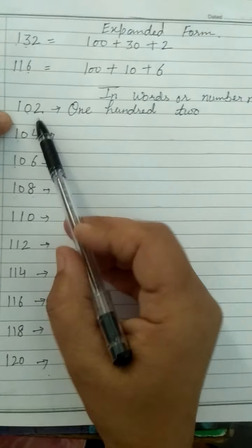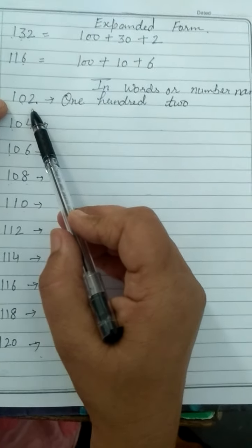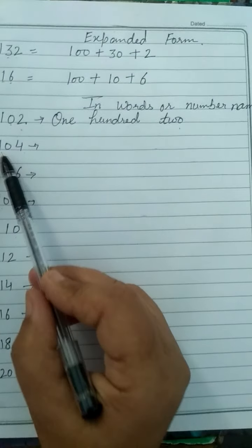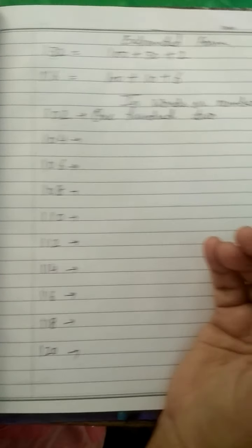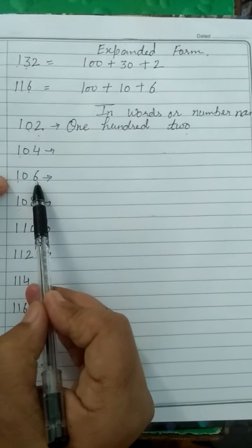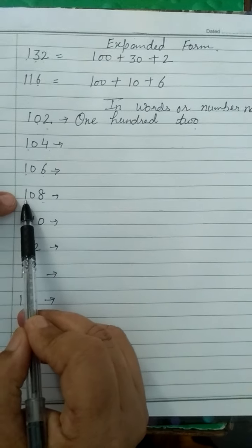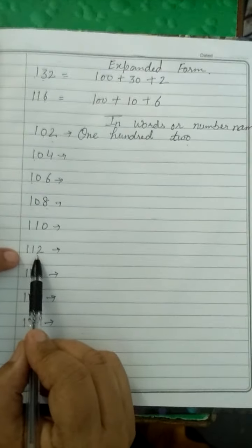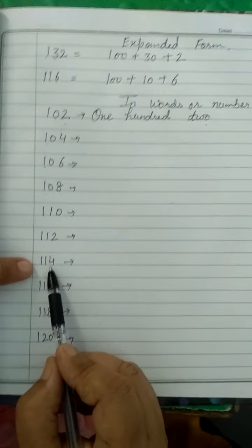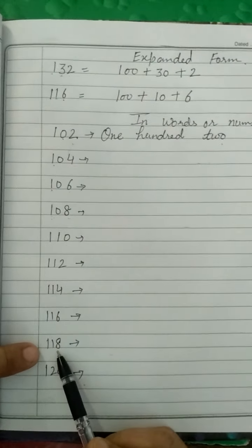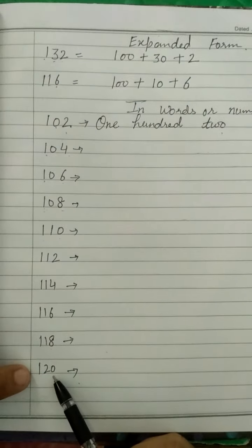Now we will read again. What is this number? 100, 102. Now you will write: 100, 104, 106, 108, 110, 112, 114, 116, 118, 120.